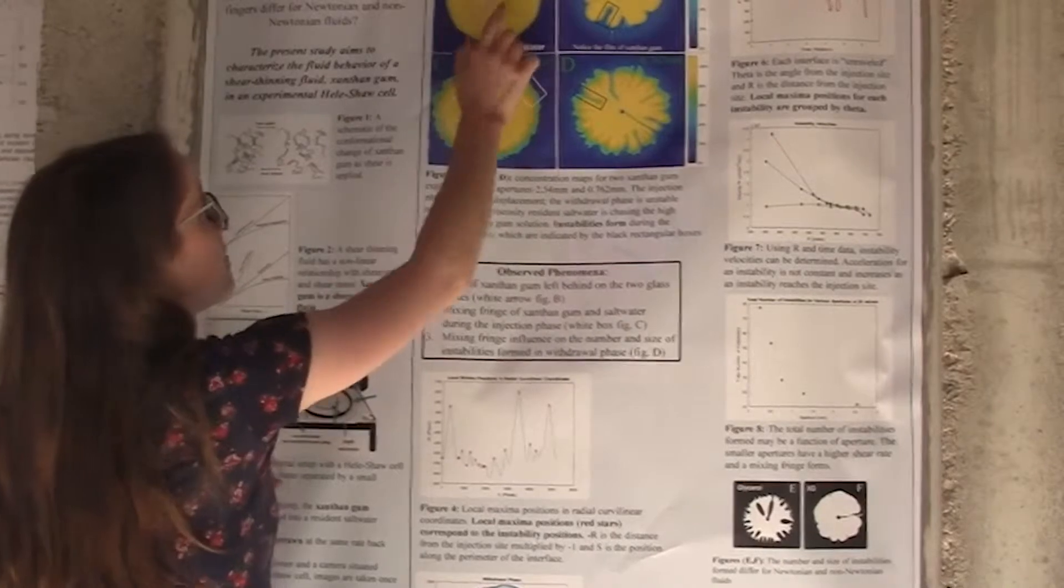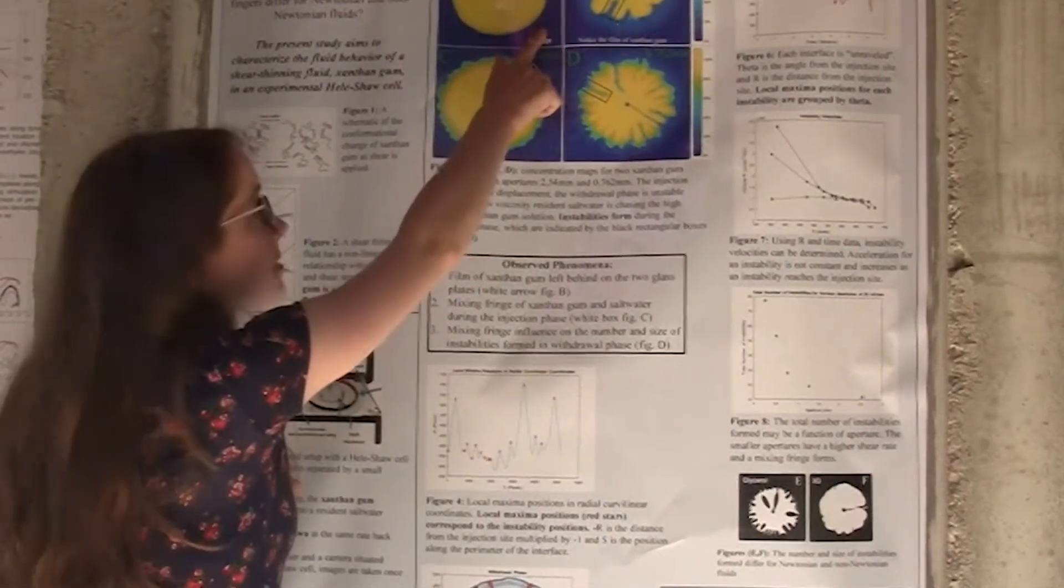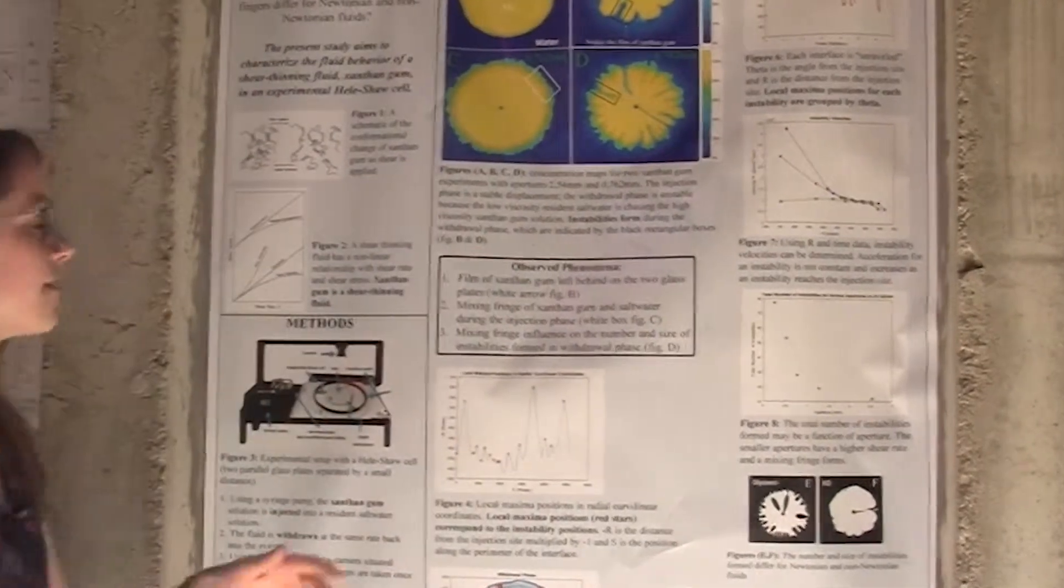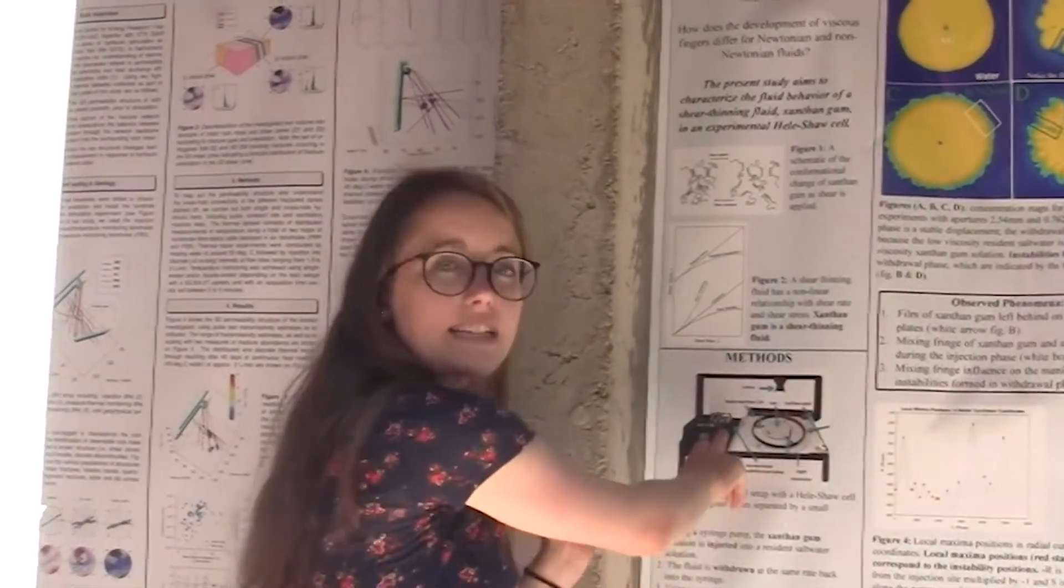Like this image here, the xanthan gum would be the yellow color here, while the resident salt water solution would be the blue here. But after we inject the fluid, we pull it back through the injection site, so it fills back into the syringe.